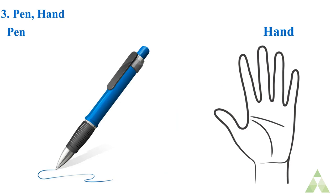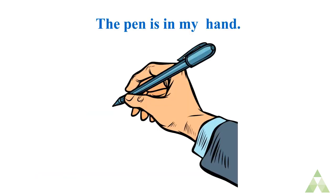Number three: pen and hand. Write a sentence using pen and hand in one sentence. The answer is: the pen is in my hand. In this sentence the word which creates a relationship between pen and hand is 'in' — where is the pen? The pen is in my hand.